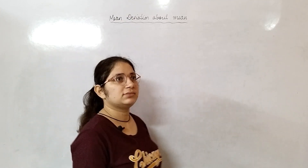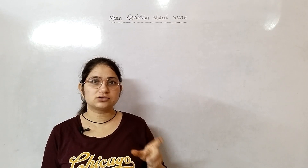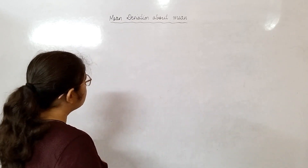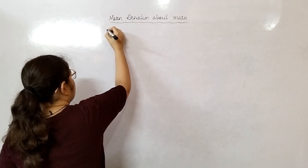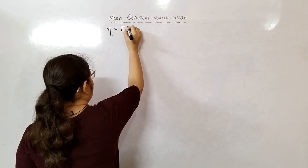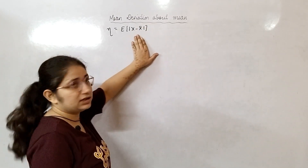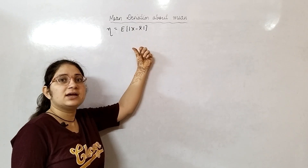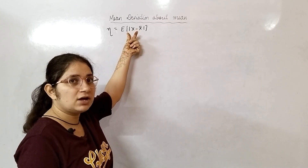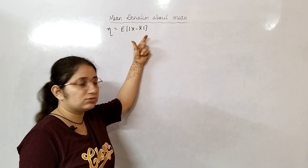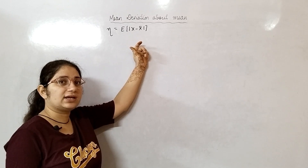Mean deviation means that you will take the difference of random variable x from the mean — that difference is called deviation. We will use the modulus because the difference can be negative, since sometimes the mean is greater than the random variable values. In that case the difference will be negative, and to remove that negative sign we take the positive difference.